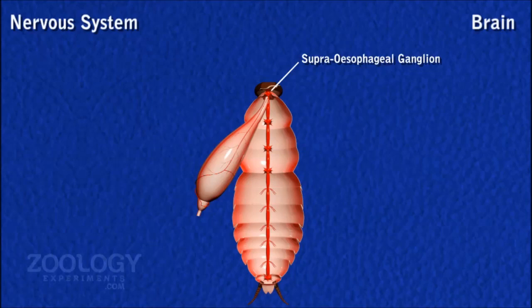The remaining three pairs of ganglia of the head fuse to form the sub-oesophageal ganglion, which lies below the oesophagus. The brain and sub-oesophageal ganglion are connected together on either side of the oesophagus by a circumfaryngeal commissure.